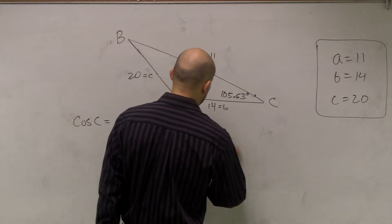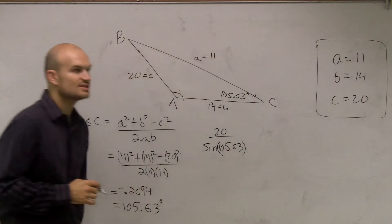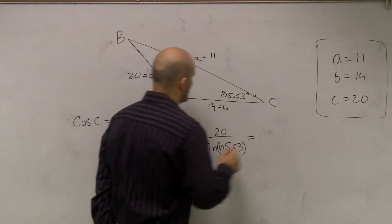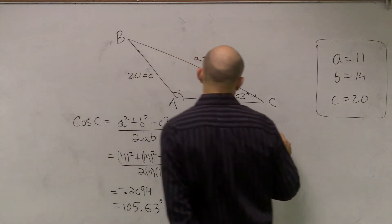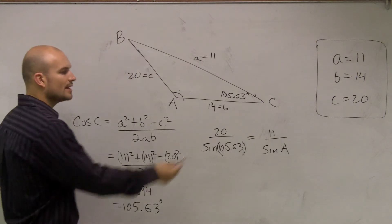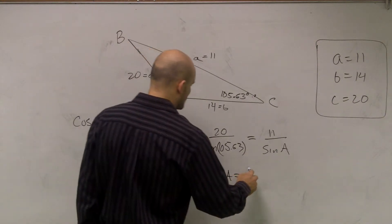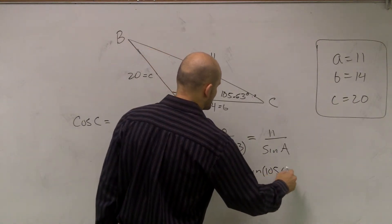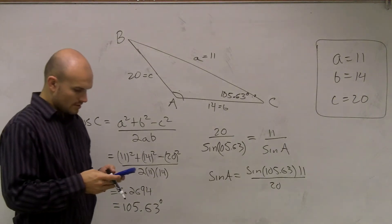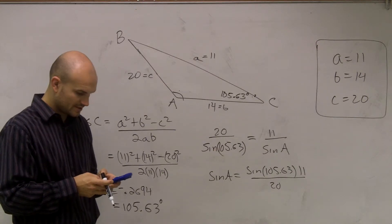We can say that 20 over the sine of 105.63 — that is C over the sine of C — equals 11 over the sine of A. Cross-multiplying and solving for sine of A, we have sine of A equals the sine of 105.63 times 11, divided by 20.